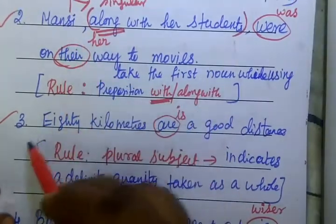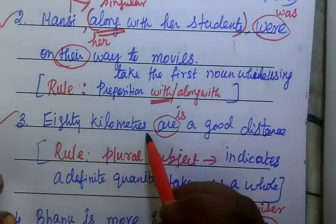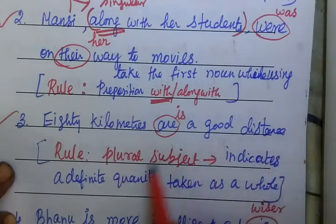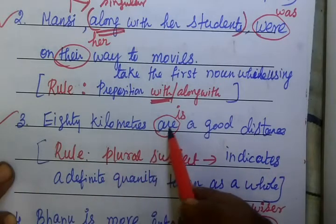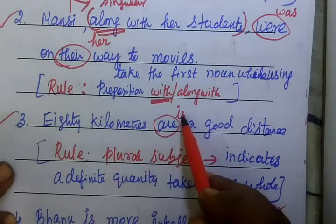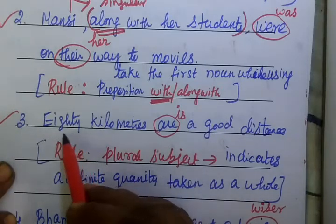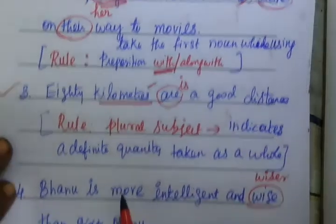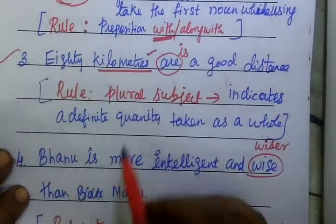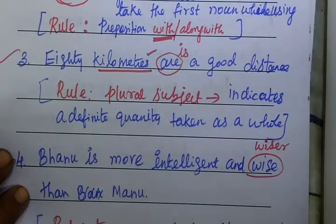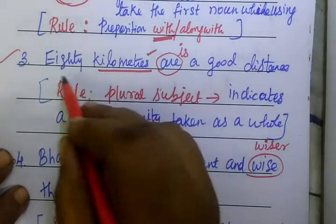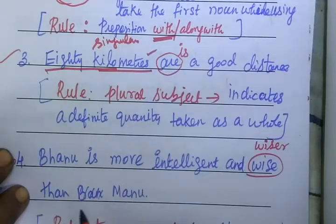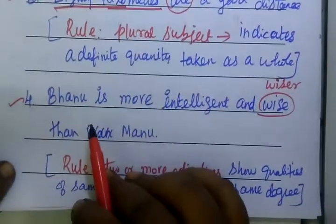Now you see the third one: '80 kilometers are a good distance.' Since this refers to a collective measurement, it should be treated as singular, so 'are' should be corrected to 'is'.